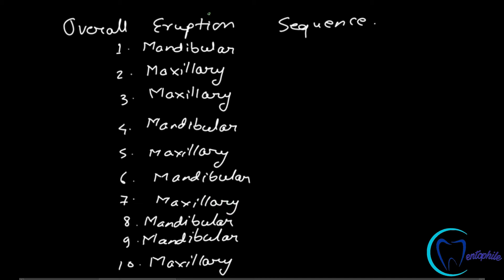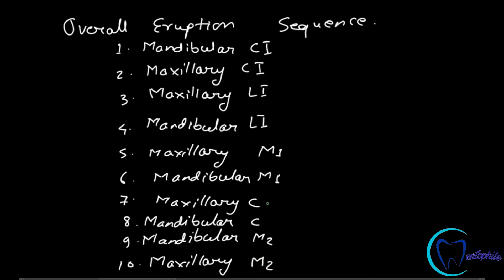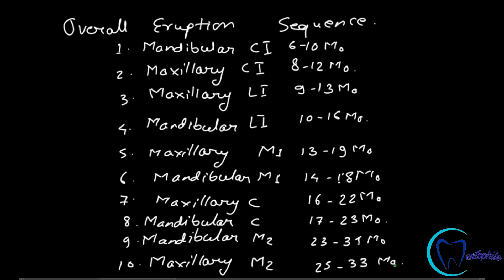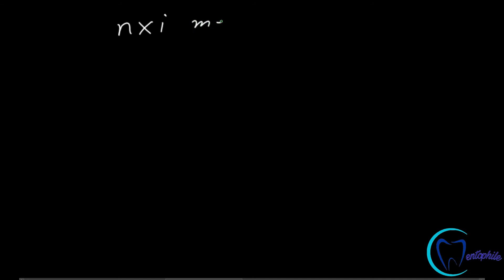The specific teeth in sequence are: first the central incisors — mandibular then maxillary. Then lateral incisors — maxillary and mandibular. Then instead of canine, the first molar erupts first — maxillary first molar then mandibular first molar — followed by maxillary canine, mandibular canine, mandibular second molar, and finally maxillary second molar. These represent the complete overall eruption sequence with their eruption times.